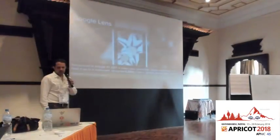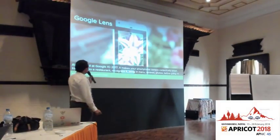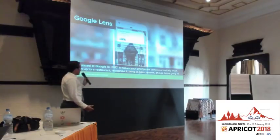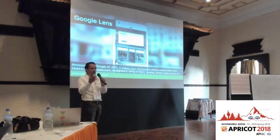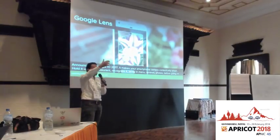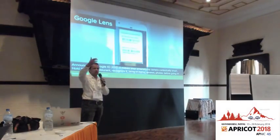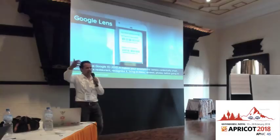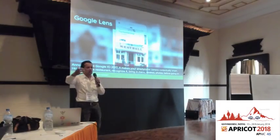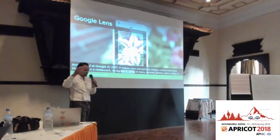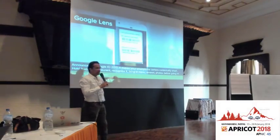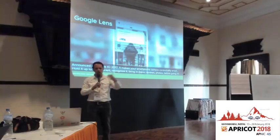Google Lens was announced at Google I/O last year. It gives you contextual awareness on your smartphone camera. I can be standing outside a restaurant, hold my smartphone up to the front, and it can recognize what restaurant it is and bring in reviews, photos, and the ability to book a table instantaneously. Or I can hold it up to a flower and understand what flower it is just by opening my camera.